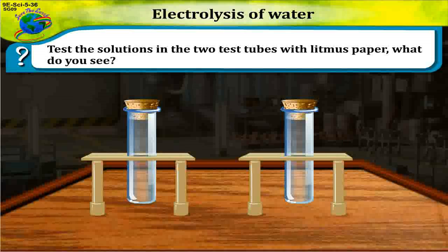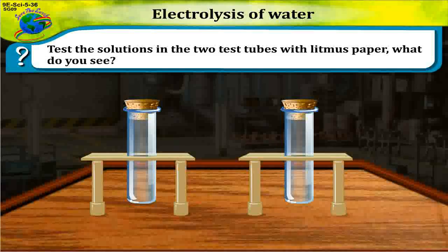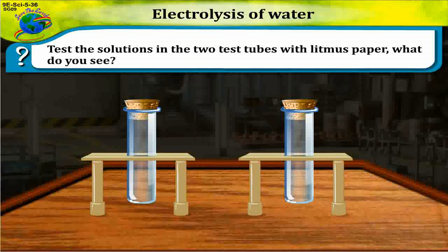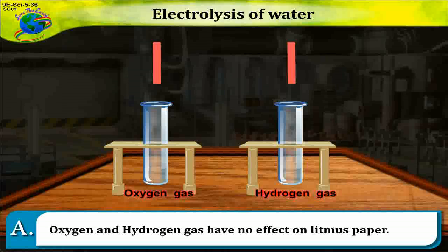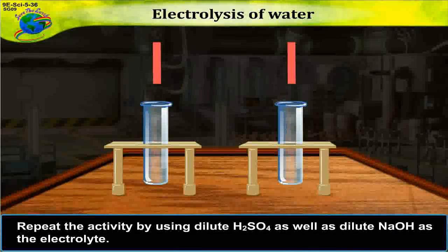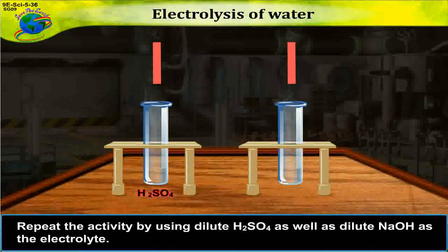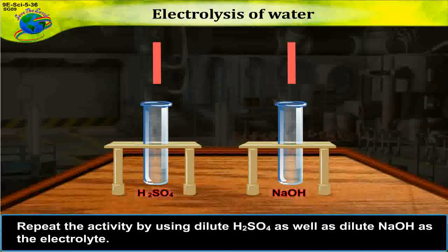Test the solutions in the two test tubes with litmus paper. What do you see? Oxygen and hydrogen gas have no effect on litmus paper. Repeat the activity by using dilute H2SO4 as well as dilute NaOH as the electrolyte.